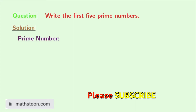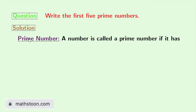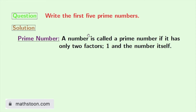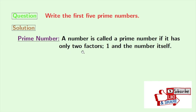Let us first understand the definition of a prime number. Prime numbers are those numbers which have only two factors, one and the number itself.